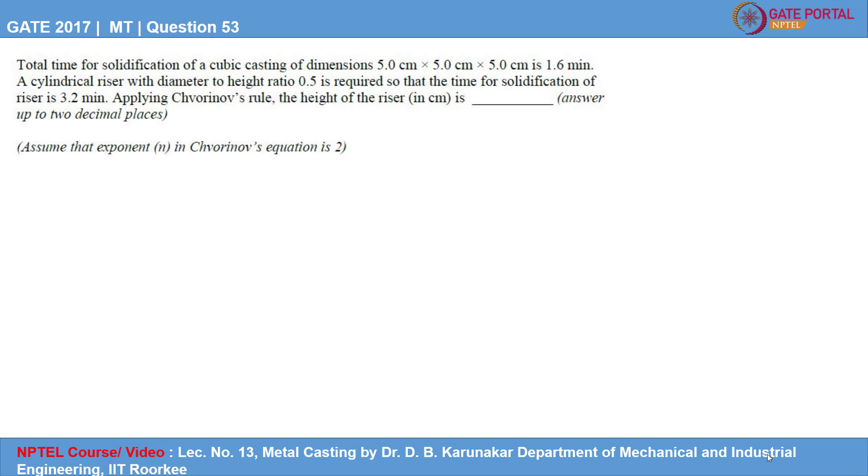GATE 2017 Metallurgical Engineering Question 53. Total time for solidification of a cubic casting of dimensions 5 x 5 x 5 cm is 1.6 minutes.